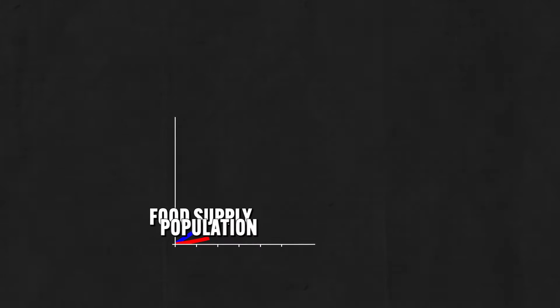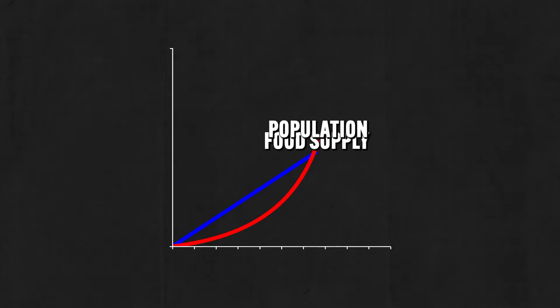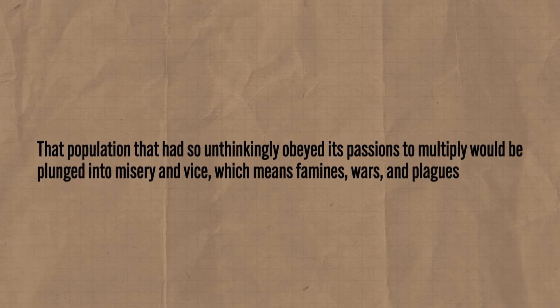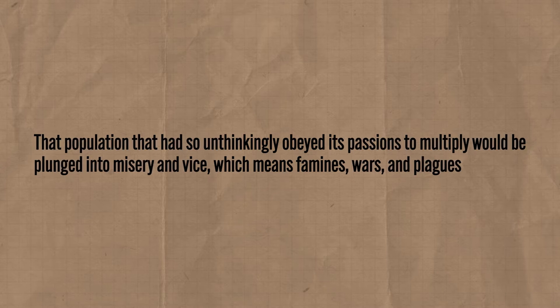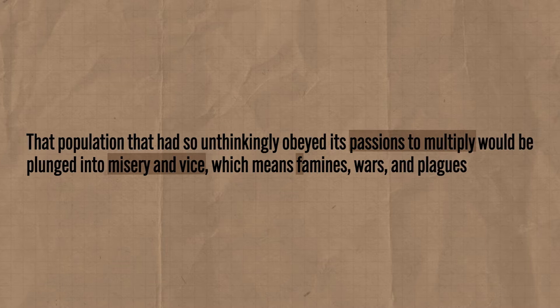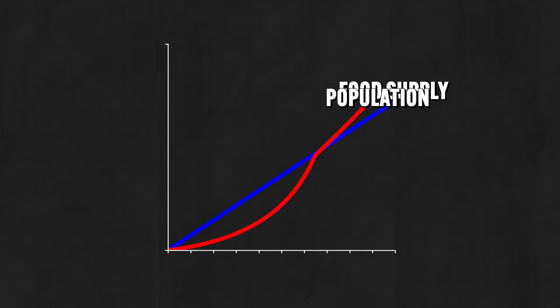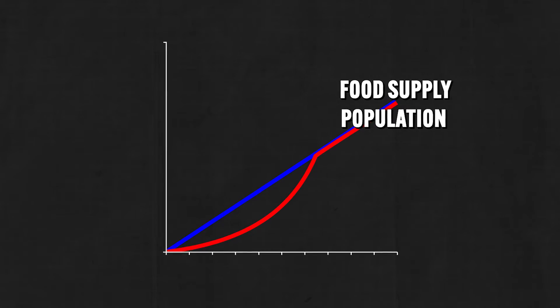Now, you and me look at all those developments and we're like, how marvelous. But Malthus looked at all those people living longer and was like, this is terrible. And here's why he was so dumpy. Based on the two principles mentioned earlier, Malthus observed that while the population was growing geometrically, the food supply was growing arithmetically. In other words, if people kept obeying their passions and multiplying like rabbits, the earth would soon run out of food. And what would happen then? That population would be plunged into misery and vice — famines, wars, and plagues — and once all those events reduced the population to a manageable level equal to the food supply, well, they could try again.